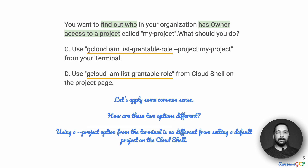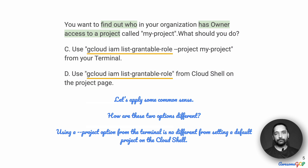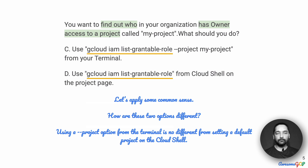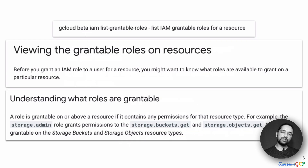Let us look at options C and D first. Option C suggests that you use gcloud IAM list-grantable-roles and provide the project ID from your terminal. Option D suggests that you use pretty much the same command, but do it from the Cloud Shell on the project page. Applying a little common sense — running gcloud from the terminal or from Cloud Shell does not make any essential changes to the command or its effect. In the first case you are specifying a project ID; in the second you have set it as part of the gcloud configuration. Therefore, there is actually no difference between option C and option D.